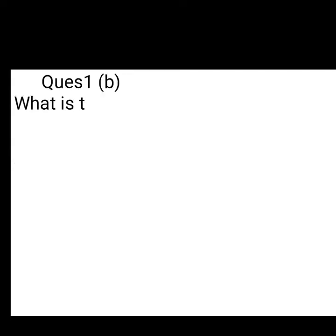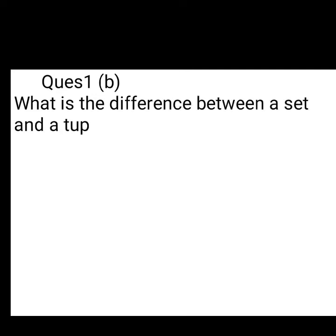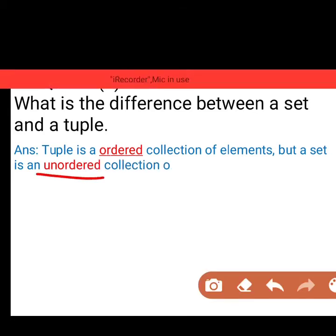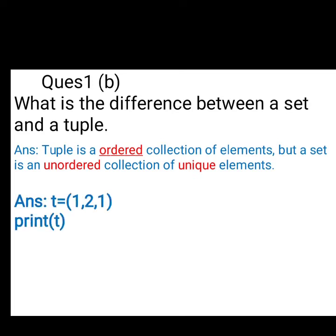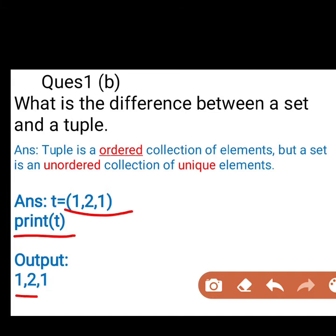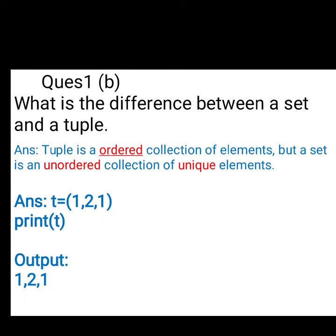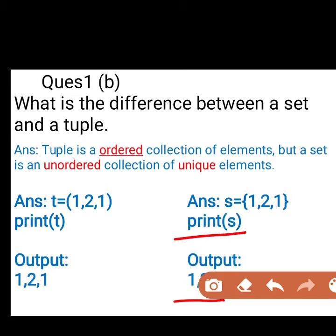Question first part b: What is the difference between a set and a tuple? Students, tuple is an ordered collection of elements, but a set is an unordered collection of unique elements. Suppose I have created a tuple with values 1, 2, 1 and I am printing it, it will give the value 1, 2, 1. Although 1 is repeated 2 times, it is not the unique collection so it will give all the values. But if I have created a set with values 1, 2, 1 and I print it, it will give only output 1 and 2. This 1 will not come again because it is the unique collection of elements.